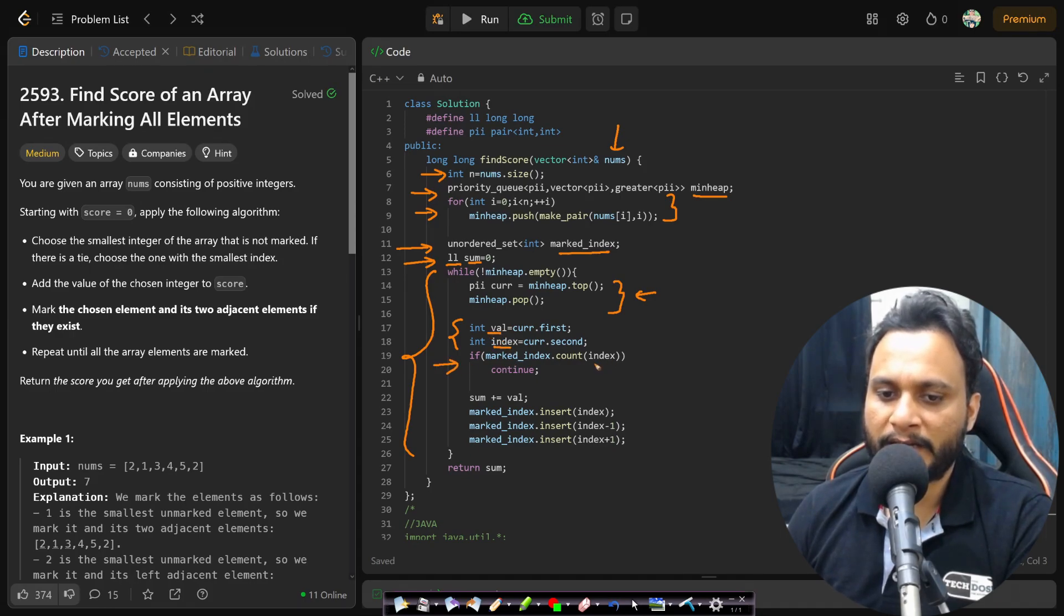And I will check if the index is already present in the marked index then I will not be processing it I will be just continuing to the next item. And if it is not present in the marked index means it is not marked. So I will be adding its corresponding value to the score sum. And I will be marking index, index minus one and index plus one as mentioned in the problem statement. And once the heap is empty means we have actually processed all the items and finally we will be returning the score sum.